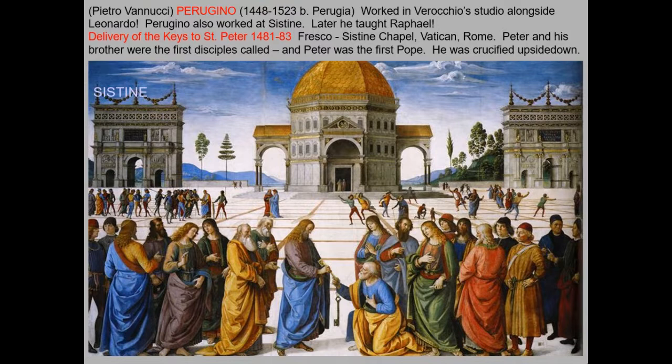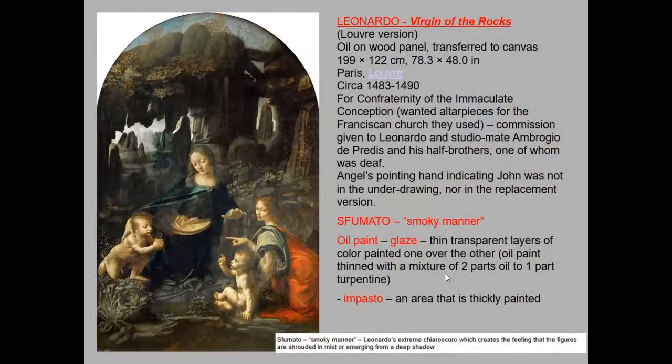Perugino's Delivery of the Keys to Saint Peter is important to know — Raphael will serve as an apprentice to Perugino. You can see a bit of Neo-Platonic thought here: a biblical scene is happening in the same world where figures appear in contemporary clothing, suggesting that the beliefs of the ancient world — after all, Christ lived in the Roman Empire — and the world of the present are shown as if they are all one continuous thing.